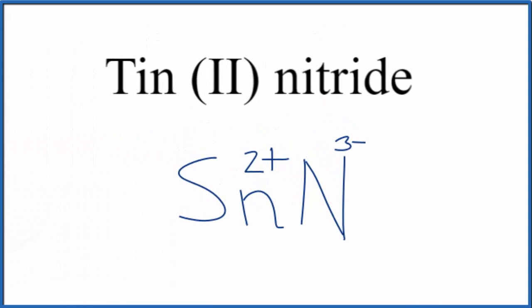Because tin(II) nitride is a neutral compound, we don't have the word ion written after it, these charges, they need to add up to 0. And that's a little bit difficult because we have a 2+, and a 3-. Let's use the crisscross method to figure the formula out for tin(II) nitride. We move the 2 over here, and the 3 down here.